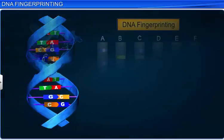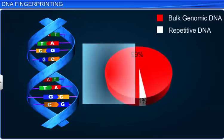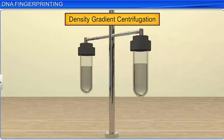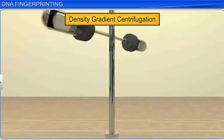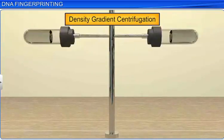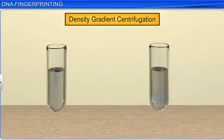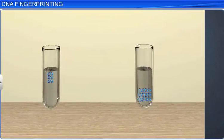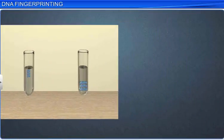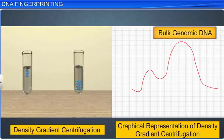To separate both genomic as well as repetitive DNA, the process of density gradient centrifugation is carried out. As satellite DNA is lighter and bulk DNA is heavier, they get separated on the basis of their density. Graphical representation shows bulk genomic DNA as a major peak and repetitive DNA as smaller peaks known as satellite DNA.